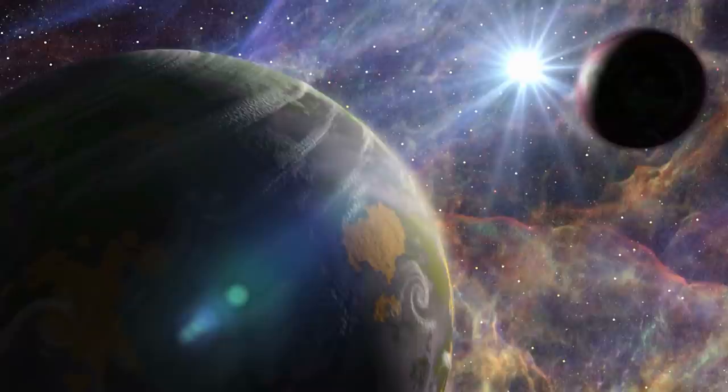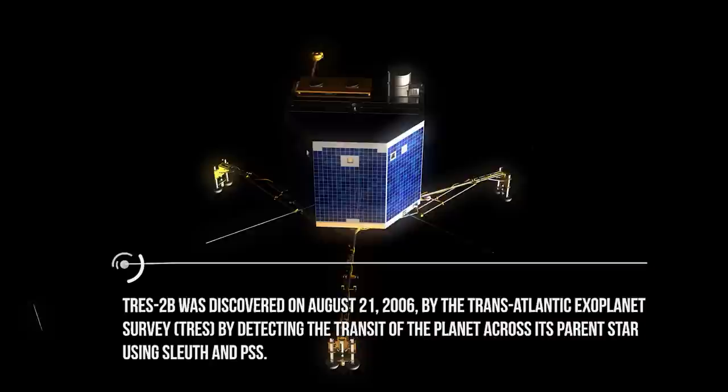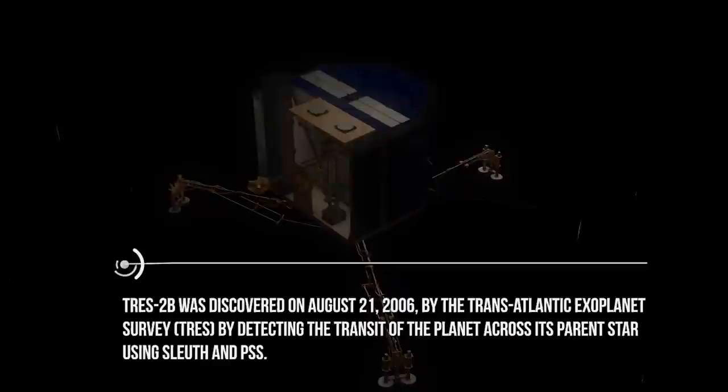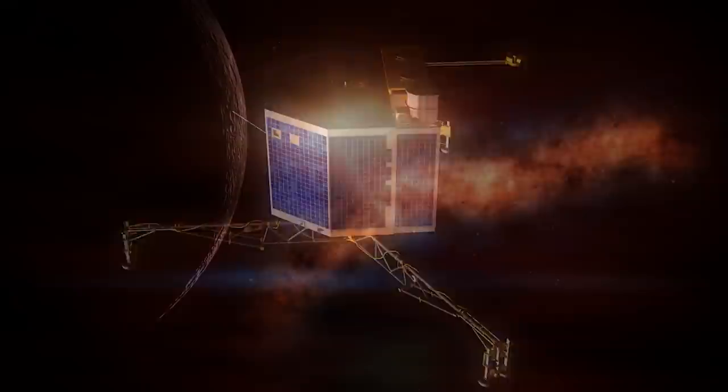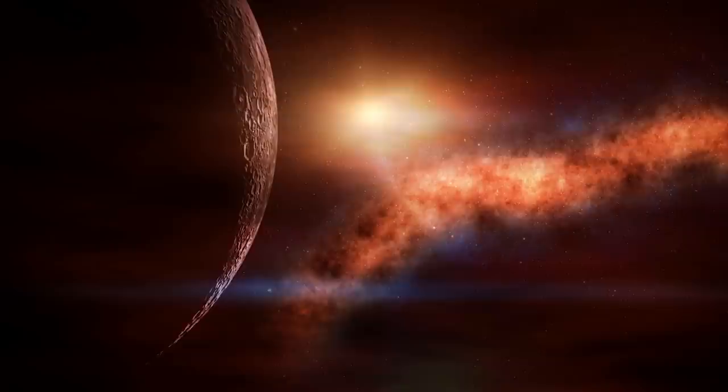TRAS 2b was discovered on August 21, 2006, by the Transatlantic Exoplanet Survey by detecting the transit of the planet across its parent star using Sleuth and PSS. This discovery was later confirmed by the W.M. Keck Observatory on September 8, 2006, by measuring the radial velocity of the star.